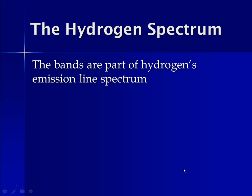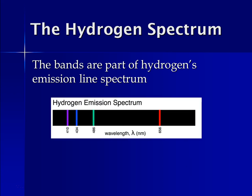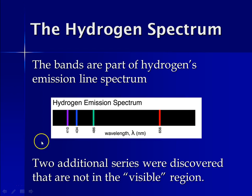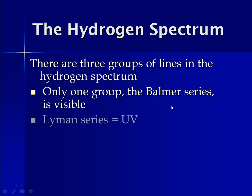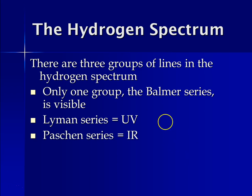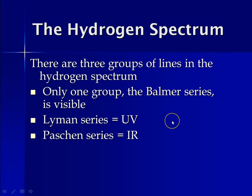The bands we see are part of hydrogen's emission line spectrum — there are four bands in the visible region. There are two additional series that are not visible: the Lyman series in the ultraviolet region and the Paschen series in the infrared region. Only the Balmer series is visible. A handy mnemonic: Balmer rhymes with Palmer, and Mr. Palmer is visible — we see him walking around the department.